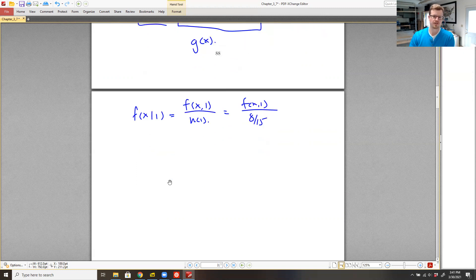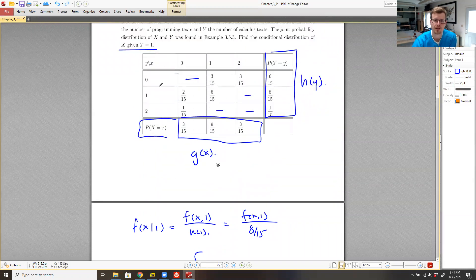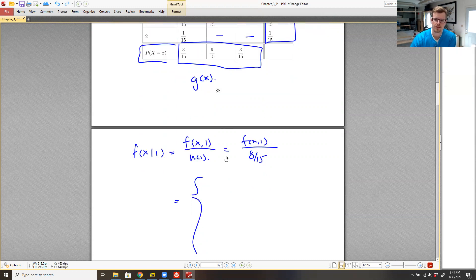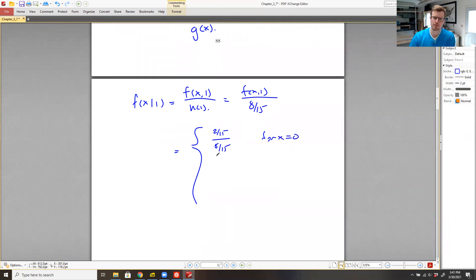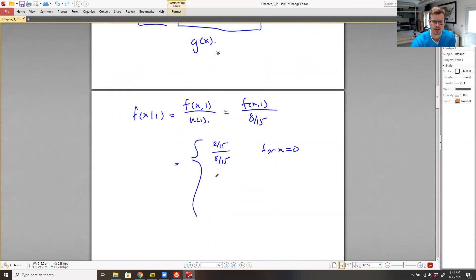So then all we have to do is go ahead and plug in those particular values. So f of zero, one is two fifteenths. So we end up with two fifteenths over eight fifteenths for x equal to zero. We end up with, for x equal to one, we have six fifteenths over eight fifteenths for x equal to one.